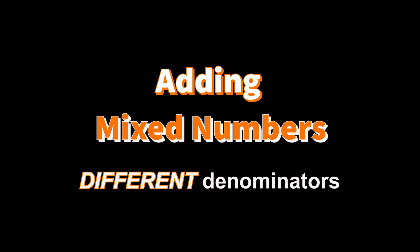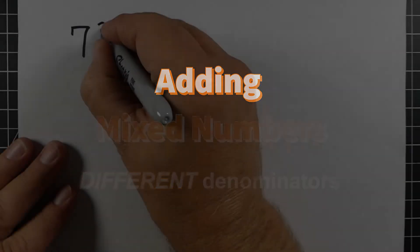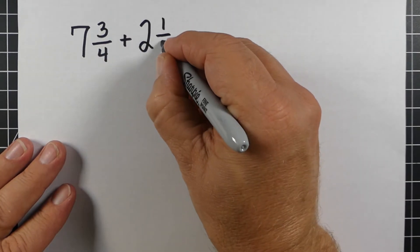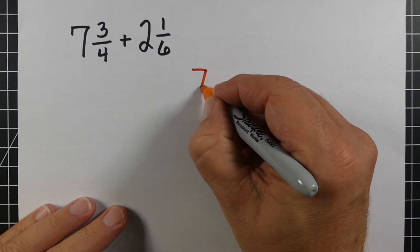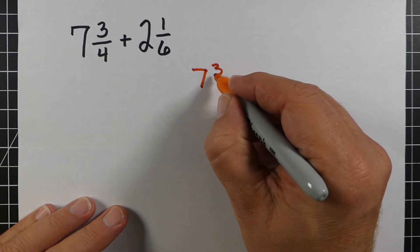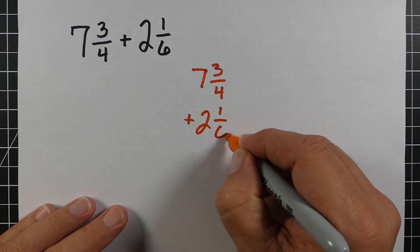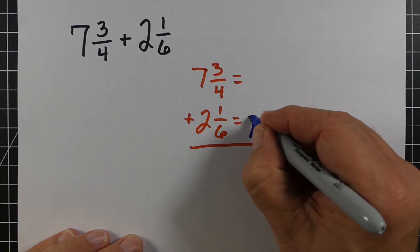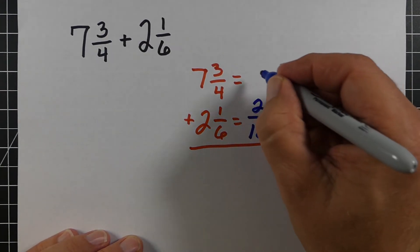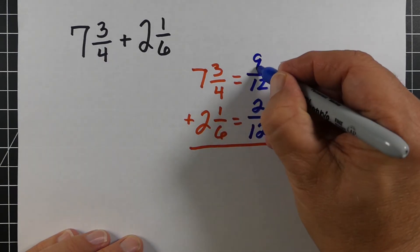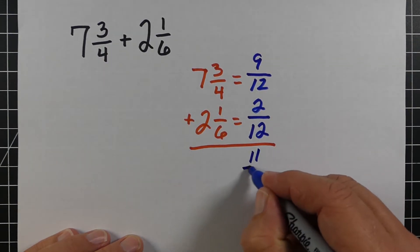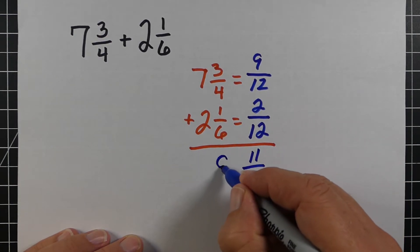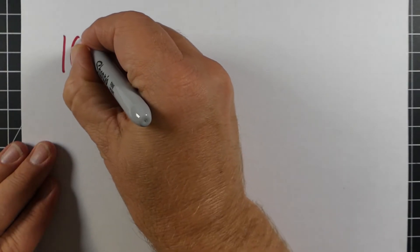Now we're going to add mixed numbers again, but this time the denominators are different. Much like when adding fractions with different denominators, the key is to get the same denominator. Taking 7 and 3/4 stacked over 2 and 1/6, we need a good common denominator — 12 is probably ideal. So we change our numerators, then we can add them up: we get 11/12 for the fraction and 7 plus 2 equals 9 for the whole numbers, giving 9 and 11/12.